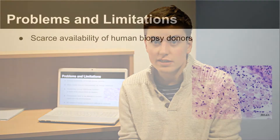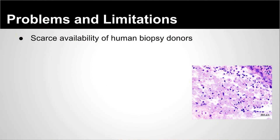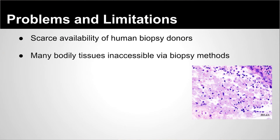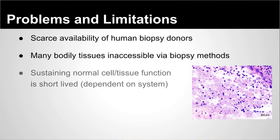But this new technique isn't perfect. Firstly, ex vivo biopsies aren't readily available, and it can be difficult to access deep tissues when things like liver tissue are required. In previous studies, research groups have only been able to sustain normal cell activity for relatively short periods of time, though this varies dependent upon the type of tissue.